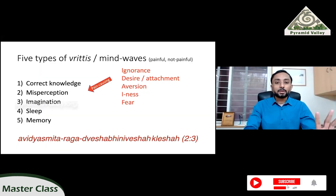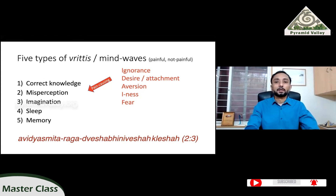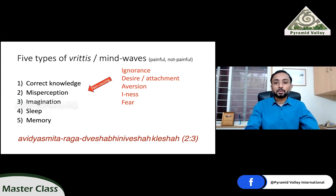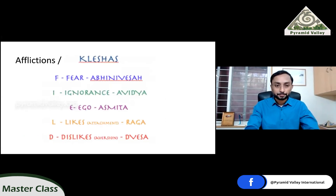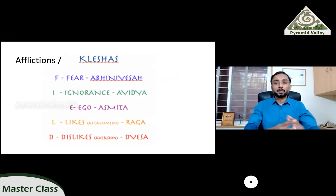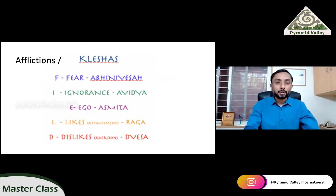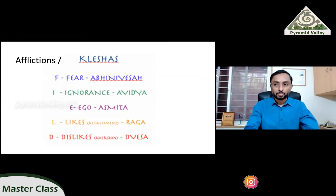Good morning, dear friends. Glad to be here on day two and thanks for joining us back. The five kleshas or afflictions which cause these five types of vrittis to be painful or impression-building are: ignorance, desire, aversion, ego, and fear. Let us quickly look at it — that was a summary of what we covered yesterday, but I want to dive in a bit more on the afflictions before we go into the rest of the topics.